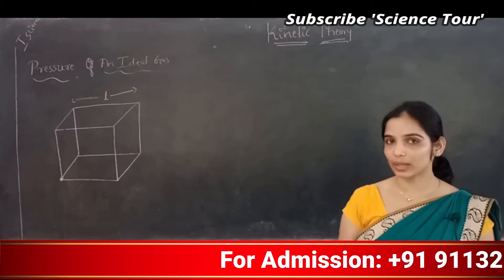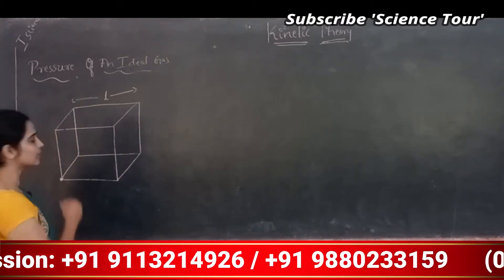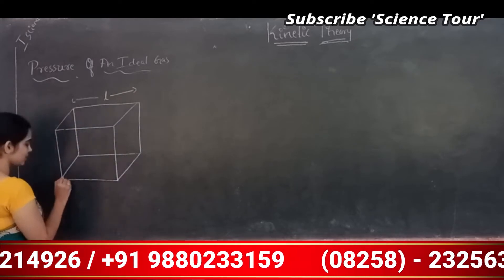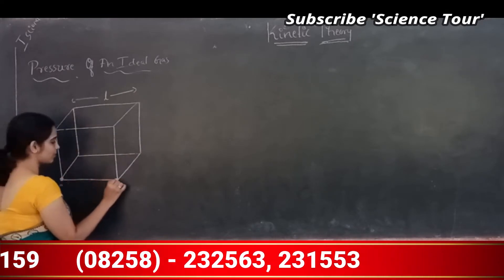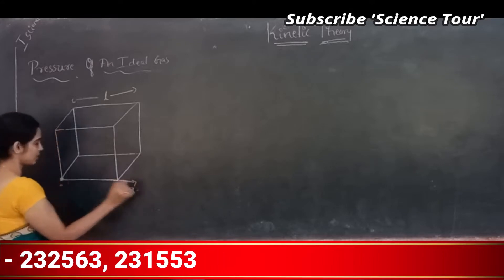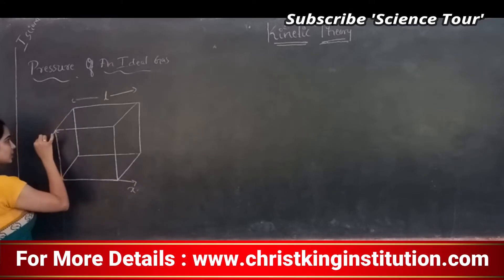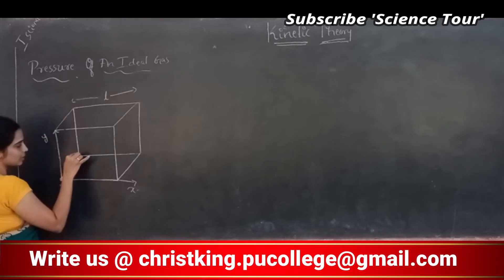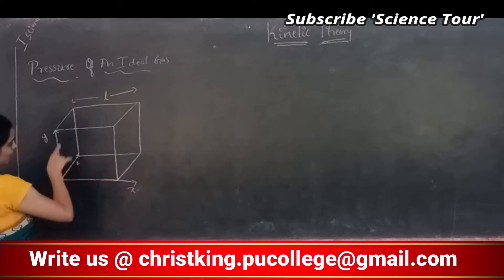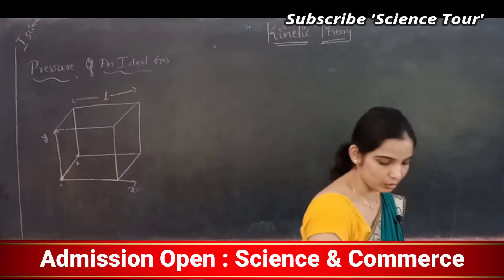Imagine gas is filled inside this cube. Let me consider this corner as the origin. Then this is my x-axis, this is my y-axis, and this is my z-axis — x, y, z all three are perpendicular to each other.